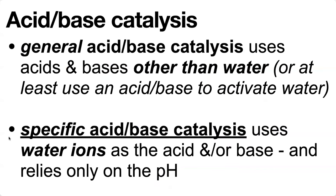Let's look at how general acids and general bases can help with this. First, let's clear up the terms general acid-base and specific acid-base. In general acid-base catalysis, one of the amino acids is typically acting as the general acid or base — sometimes working through water, stealing a proton or giving one to water to activate it. In specific acid-base catalysis, it specifically uses water ions as the acid or base and relies only on the pH — it doesn't need anything to activate the water, just relying on the natural concentration of hydronium and hydroxide ions at a given pH.